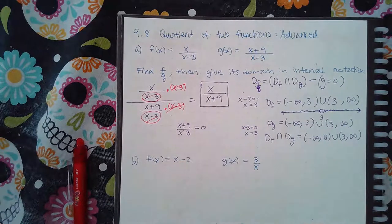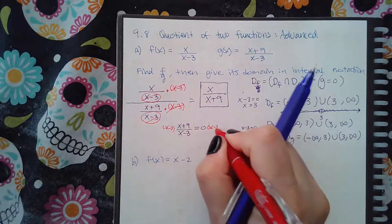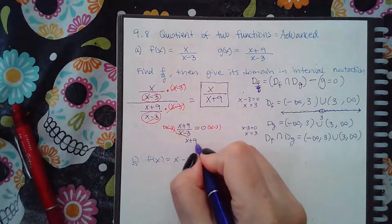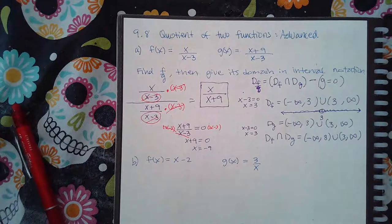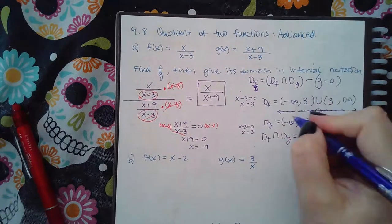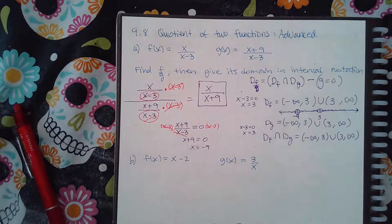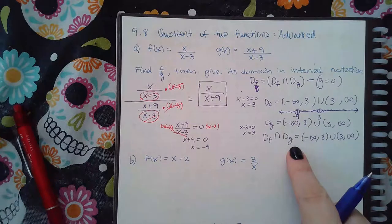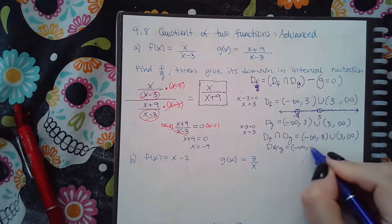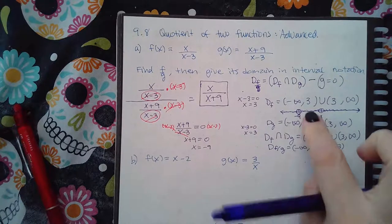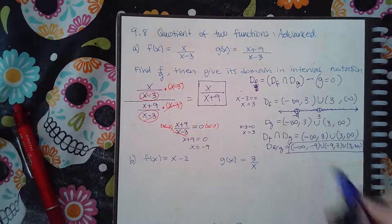Now I have to remove wherever g equals zero. Setting g = 0 and multiplying both sides by the common denominator gives x+9 = 0, so x = −9. That means x = −9 must also be removed — another hole at −9. So the domain of f over g is from negative infinity to −9, then from −9 to 3, then from 3 to infinity.